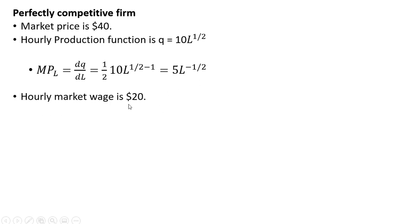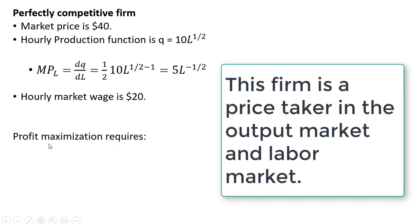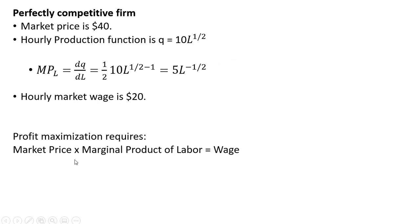The hourly market wage is $20. We want to find the profit maximizing level of employment. Profit maximization requires the following, where the market price, in this case $40, multiplied by the marginal product of labor equals the wage.